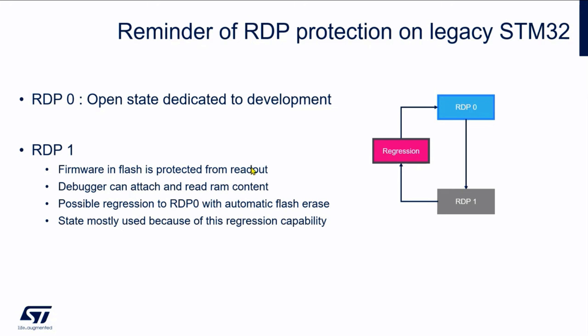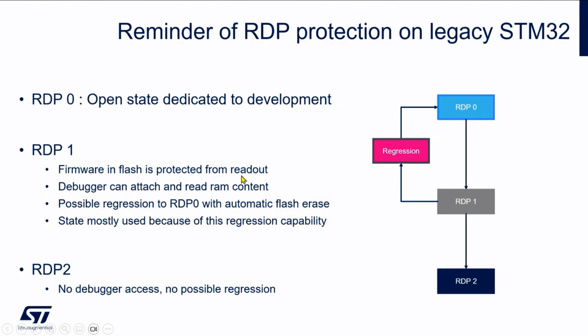This state is mostly used by ODR customers because of this regression capability. Then we have RDP level 2 where the device is locked — we no longer have any debugger access and we cannot go back. The device is still able to run, and if you have implemented an update mechanism, it can update itself by receiving a new firmware through any communication link. But the device cannot be reopened anymore. This is the state for all legacy STM32.